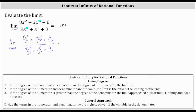Next we simplify. 8x squared divided by x cubed simplifies to 8 divided by x. 2x to the fifth divided by x cubed simplifies to 2x squared. 8 divided by x cubed doesn't simplify. In the denominator, 9x cubed divided by x cubed is 9, plus x squared divided by x cubed is 1 over x, and 3 divided by x cubed doesn't simplify.